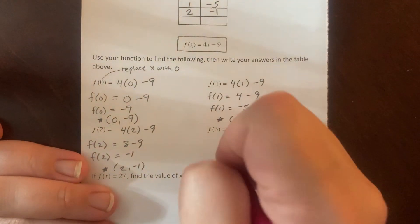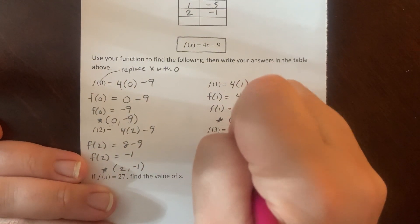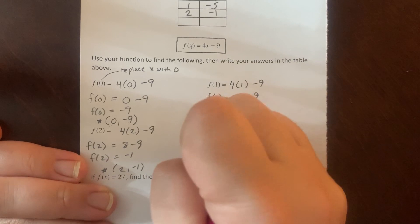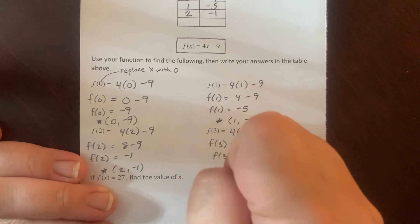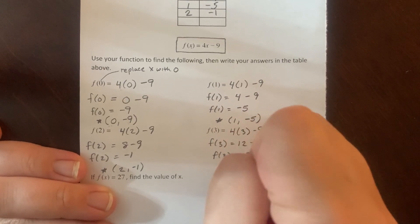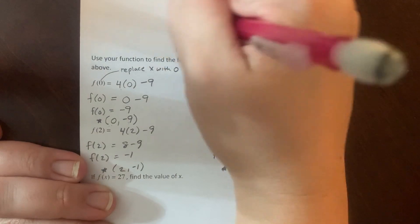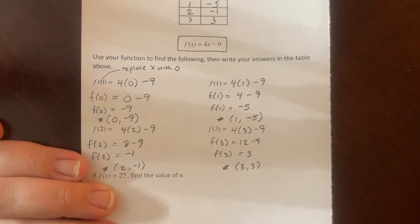And last one. 4 parentheses 3 minus 9. F of 3 equals 12 minus 9. F of 3 equals 3. So my ordered pair is 3, 3. I'm going to fill that in.